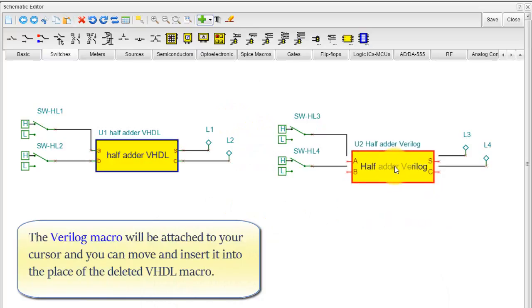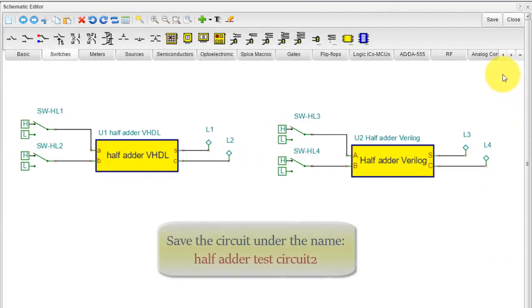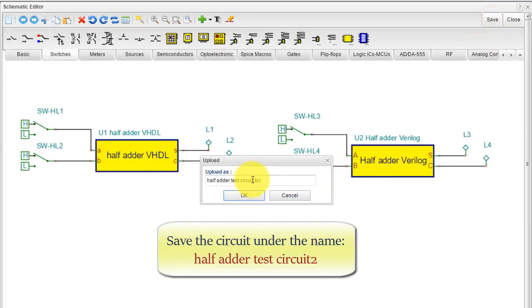The Verilog macro will be attached to your cursor, and you can move and insert it into the place of the deleted VHDL macro. Save the circuit under the name HalfAdderTestCircuit2.